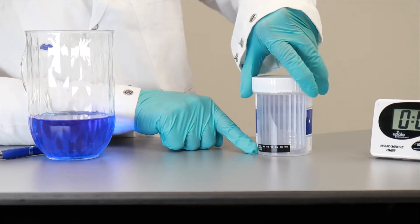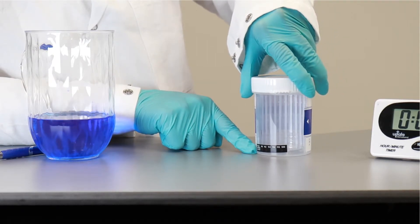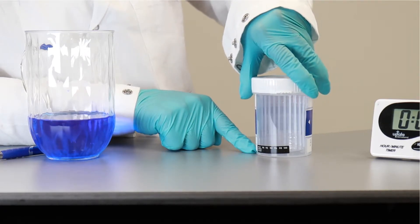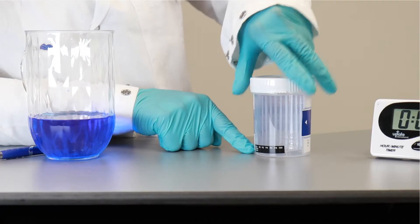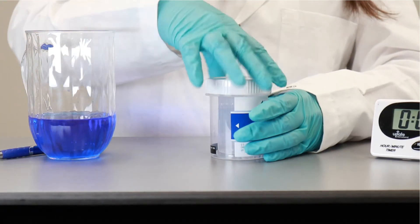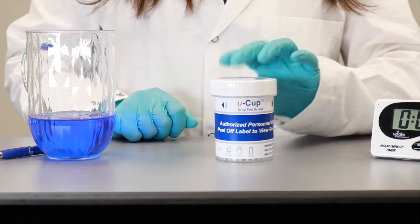Also, in the back of the cup, there is an LCD temperature strip to make sure that the urine temperature is within the range of biological urine. So you can tell if the urine is biological or it is synthetic, which is very common these days.